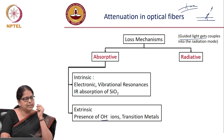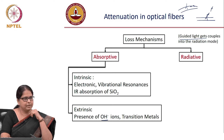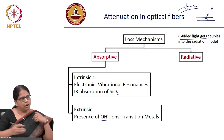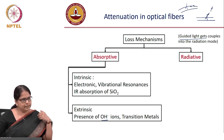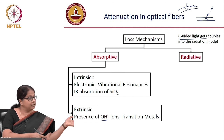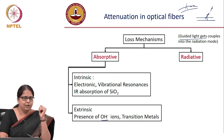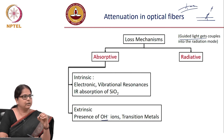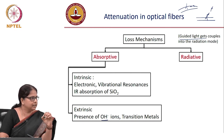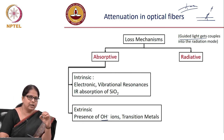Scattering is inversely proportional to λ⁴ — the longer the wavelength, the smaller the scattering. Rayleigh scattering cannot be avoided in glass fiber because SiO2 itself is a molecule whose size is smaller than the wavelength of light, making it an inherent Rayleigh scatterer.